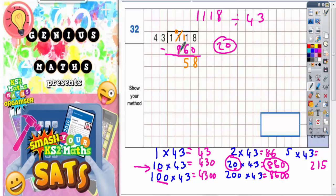0 take away 8 we can't do. So we need to borrow 1 again. So borrow 1 from this 1 and that will make 0. And the 1 we borrow will make this into 10. 10 take away 8 is 2. So 258.